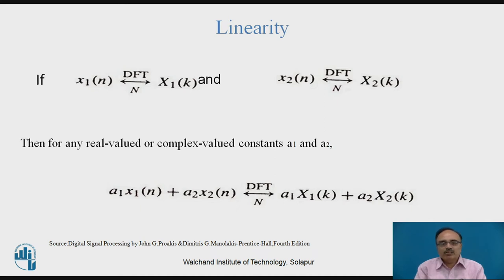The second property is linearity, also called the additive or superposition property. If two sequences x1(n) and x2(n) are given with their corresponding DFTs X1(k) and X2(k), then the N-point DFT of a1·x1(n) + a2·x2(n) equals a1·X1(k) + a2·X2(k), where X1(k) is the DFT of x1(n) and X2(k) is the DFT of x2(n). So the superposition principle is applicable to DFT as well.